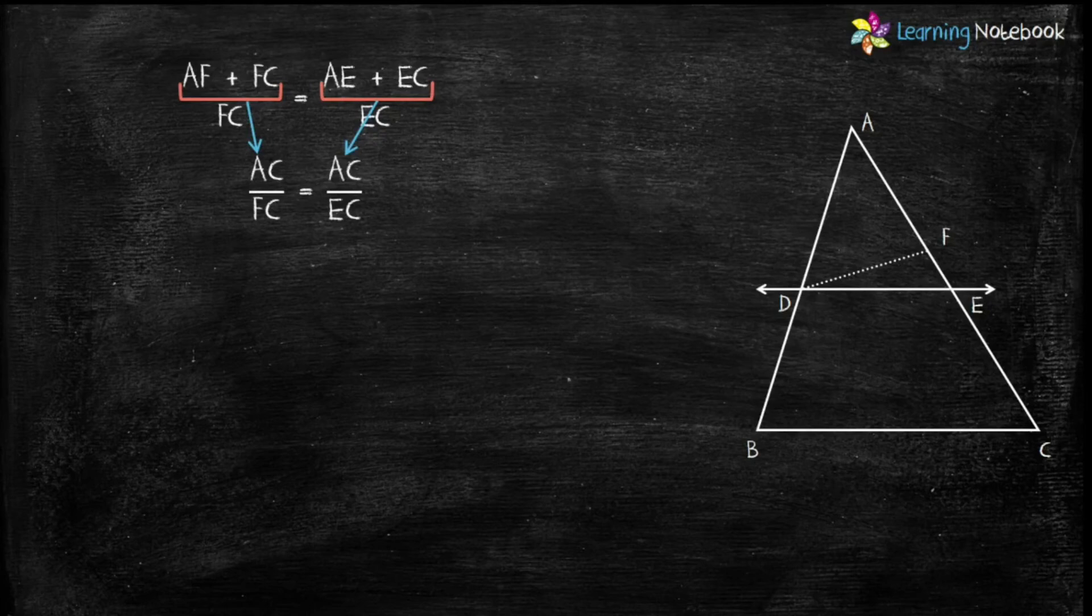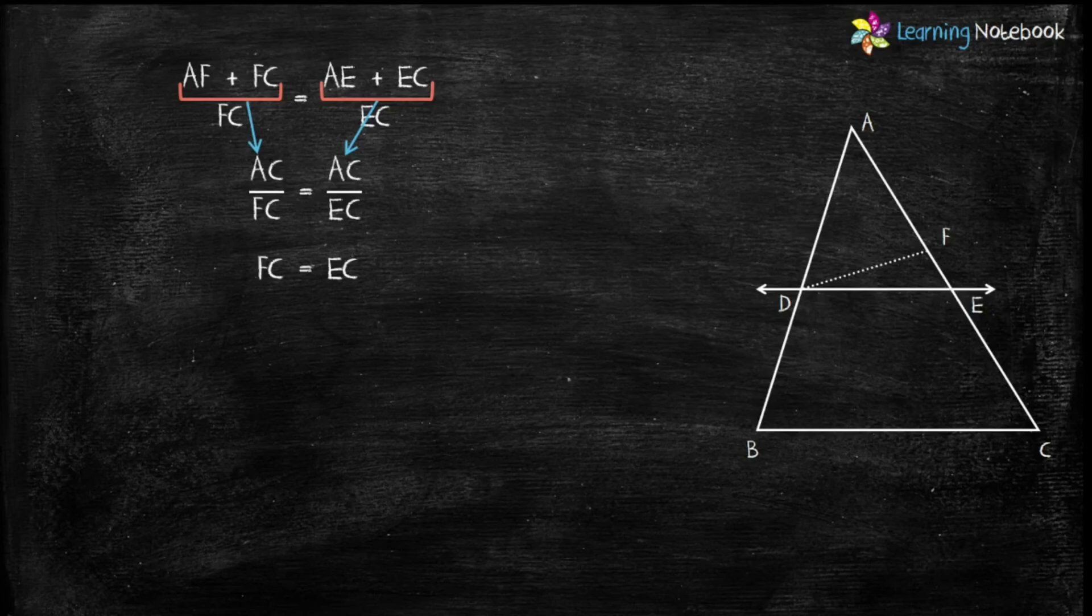Therefore, we get AC by FC equals AC by EC. This implies FC equals EC.